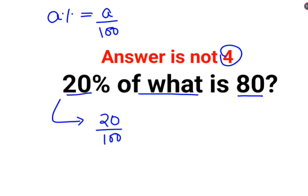Of means multiplication. What - let that number be x. Is 80. So we have: (20/100) × x = 80. Now at this point you want to find the value of x.